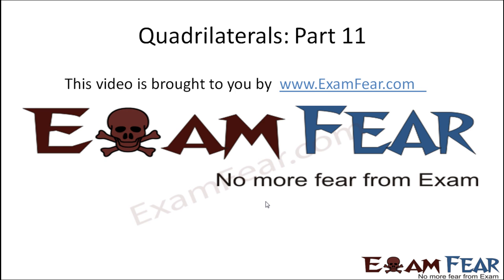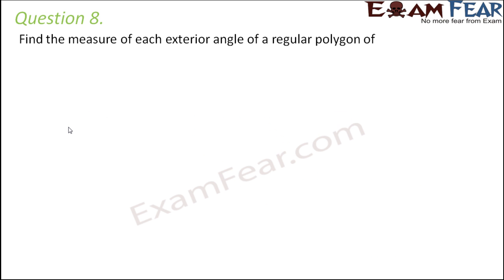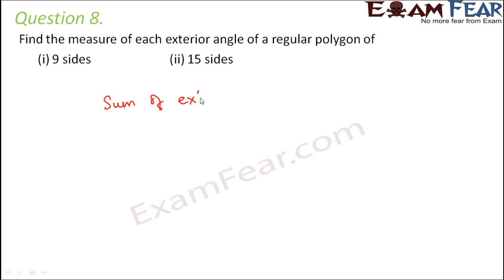Hello friends, this video on quadrilaterals part 11 is brought to you by examfear.com — no more fear from exam. Question number 8: find the measure of each exterior angle of a regular polygon of 9 sides and of 15 sides. We have learned that the sum of the exterior angles for any polygon, no matter how many sides it has, will always be equal to 360 degrees.